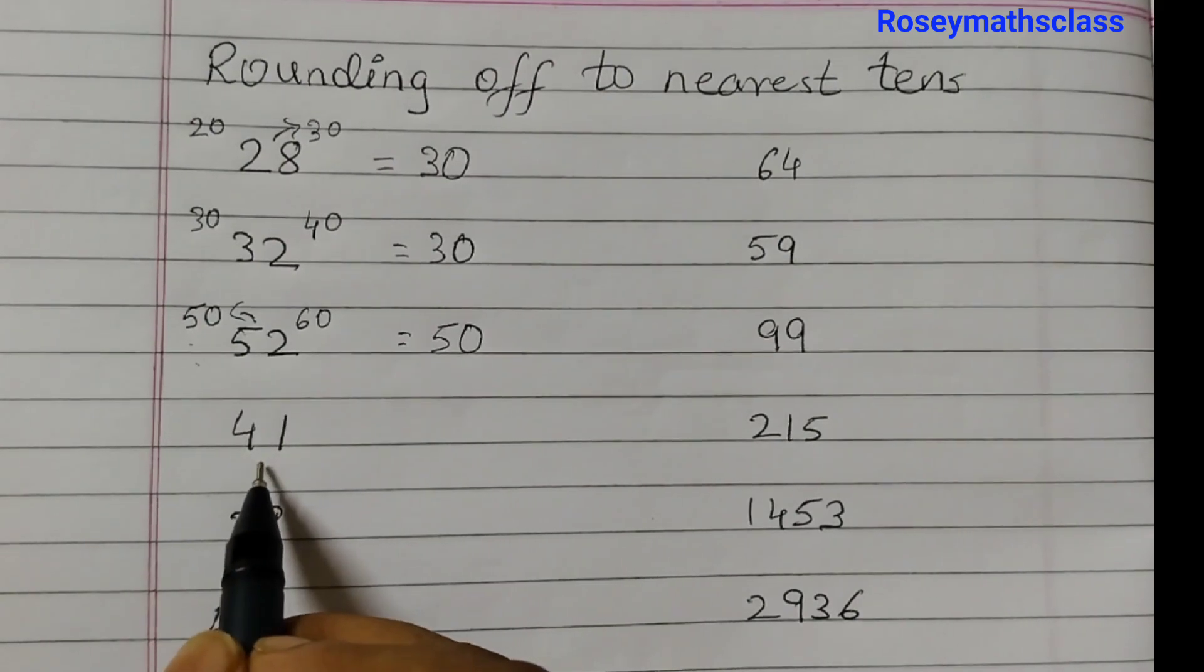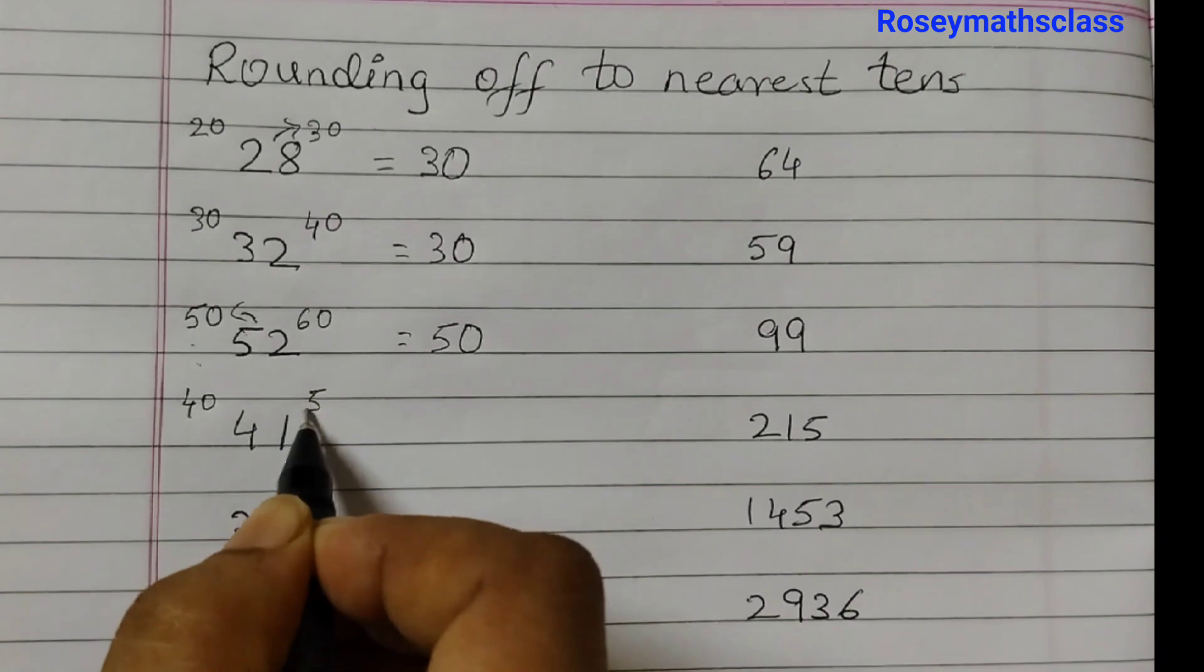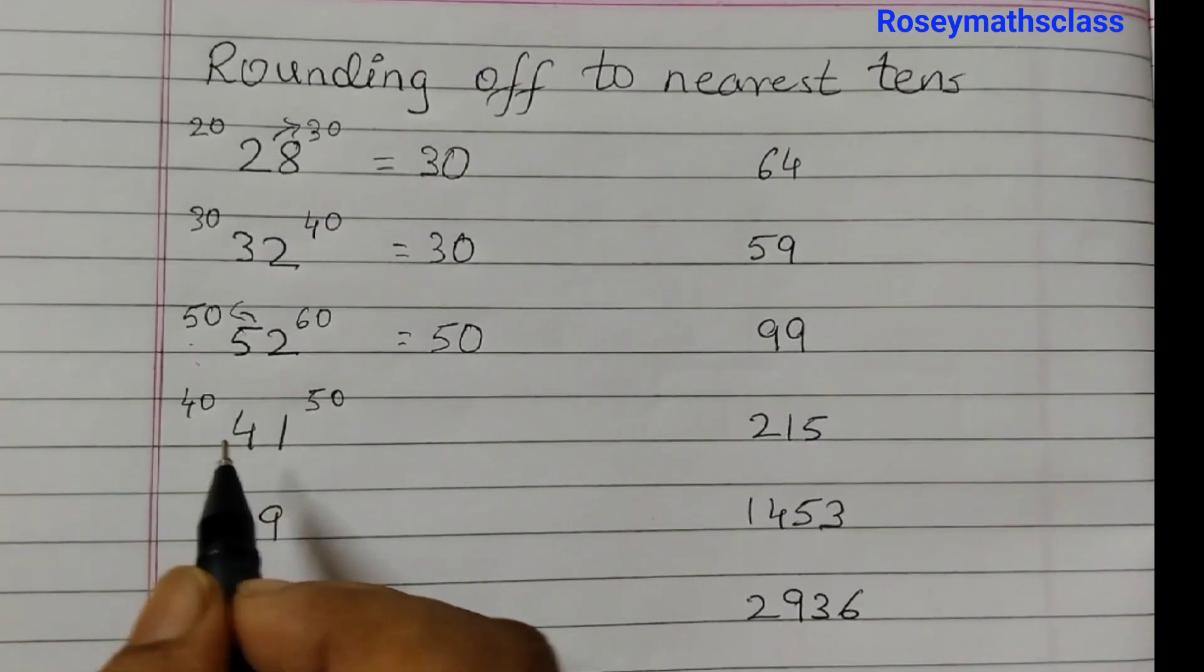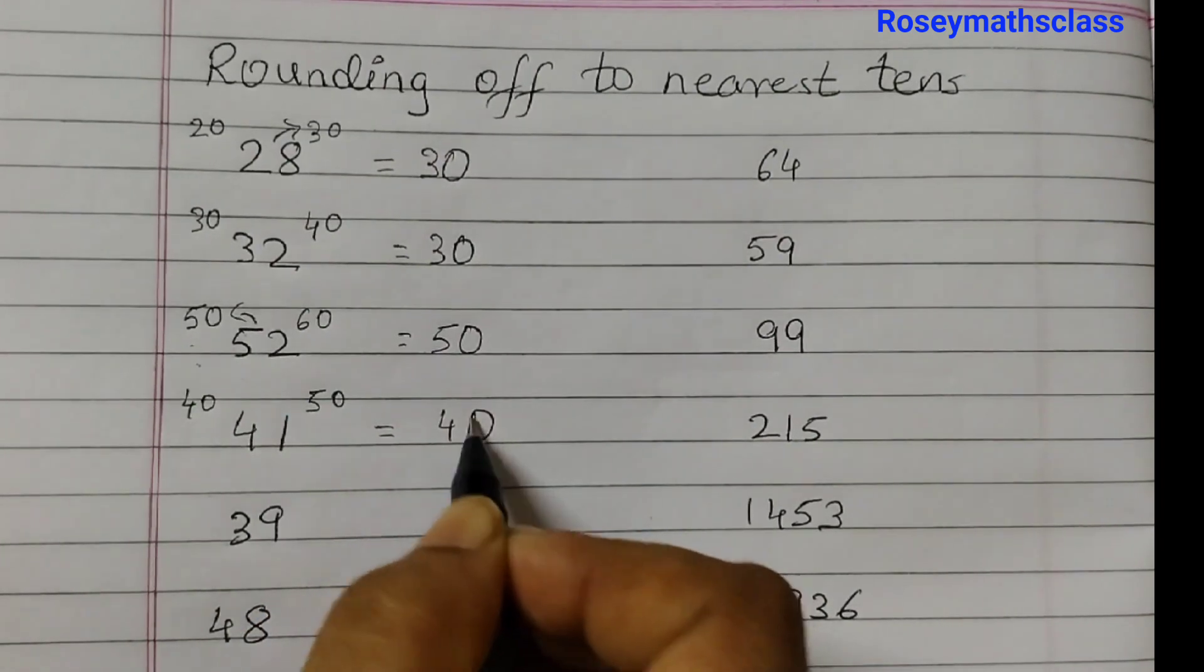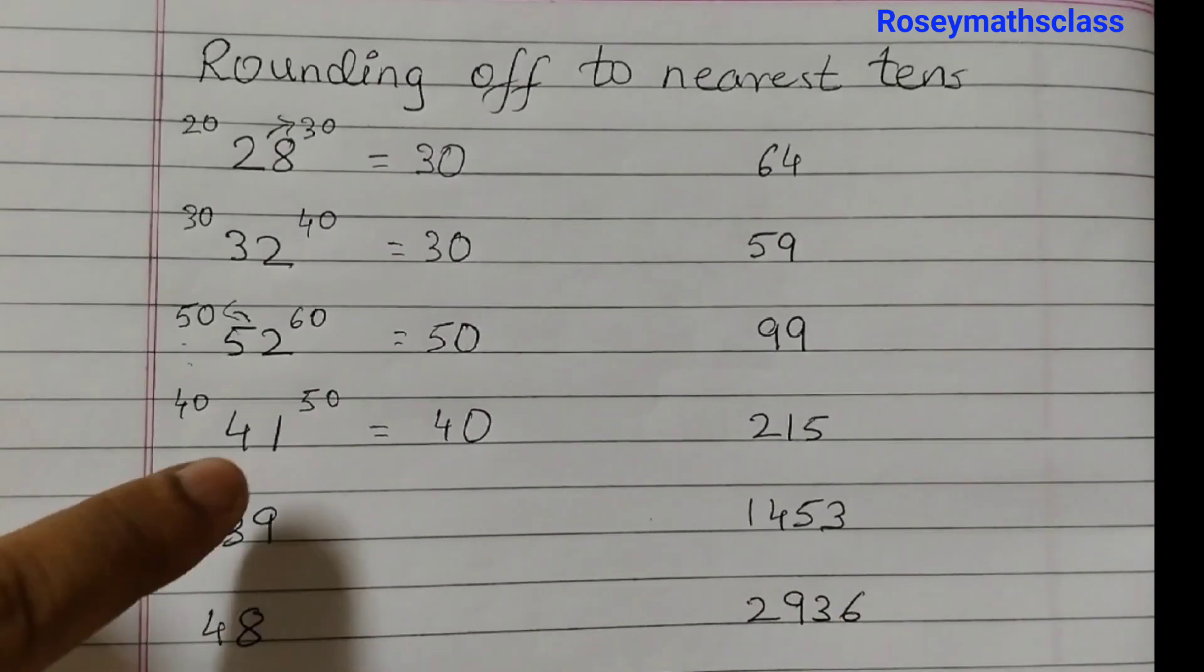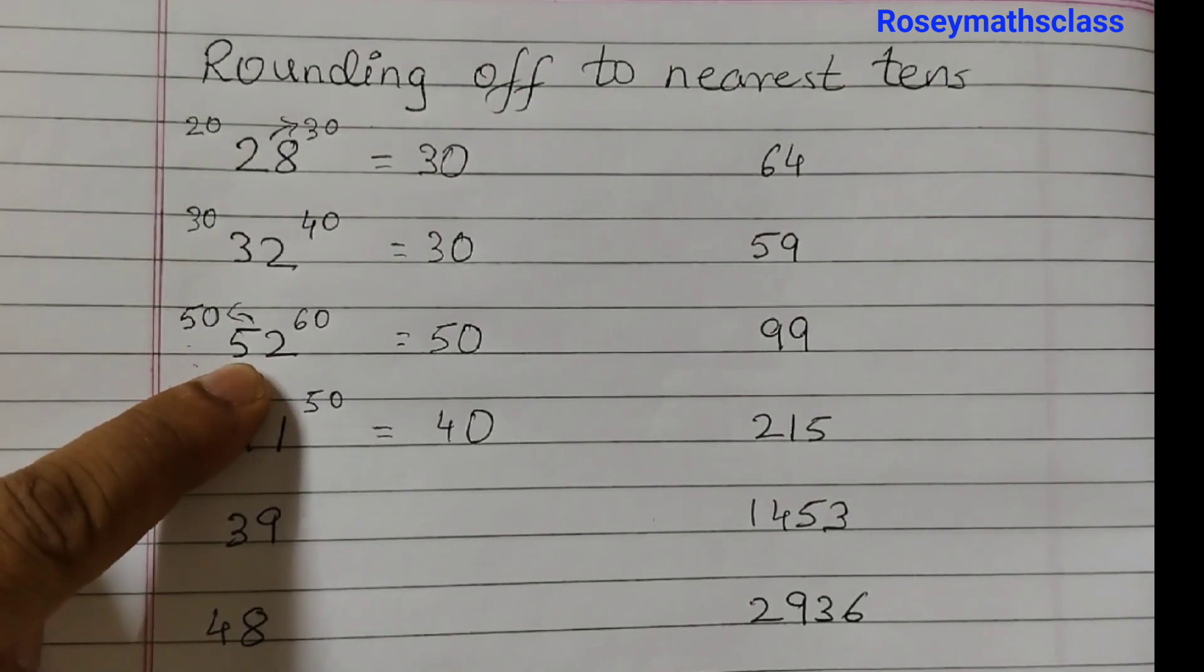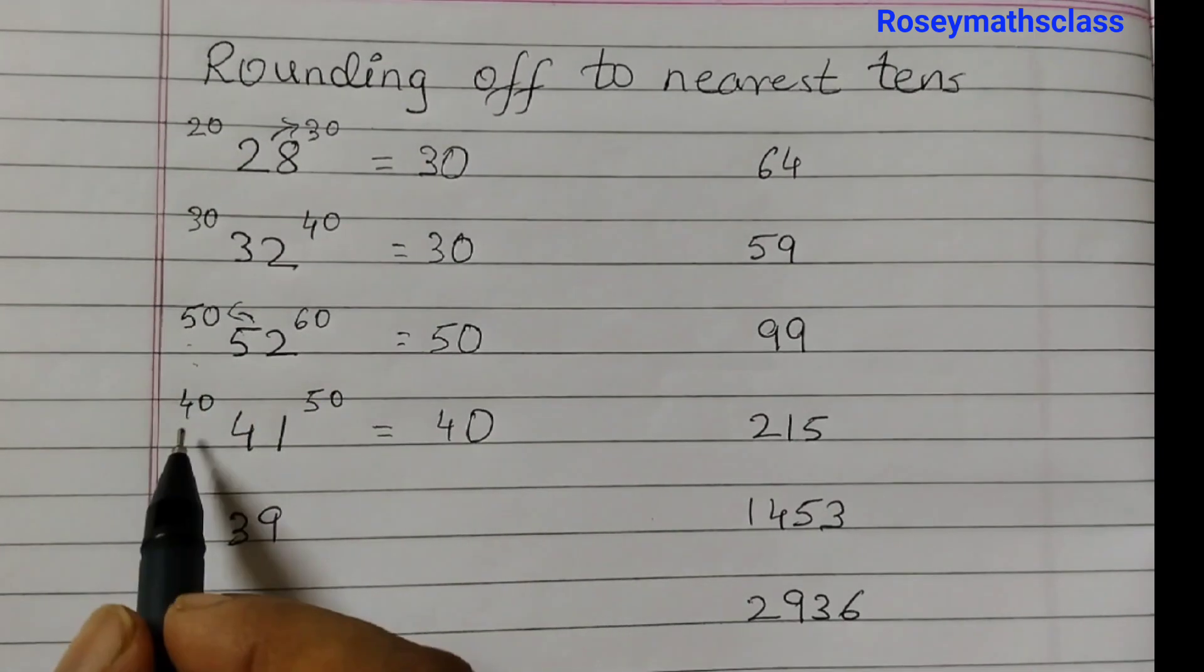41 is between 40 and 50, and 41 is nearer to 40. So rounded off to nearest tens would be 40. Whenever you have 1, 2, 3, or 4 in the ones place, that would be rounded off to the smaller number.